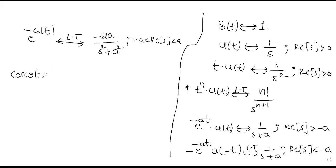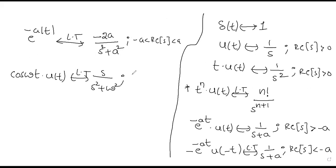For cos(ωT)·U(T), the Laplace transform is S/(S² + ω²), with ROC: real part of S greater than 0.